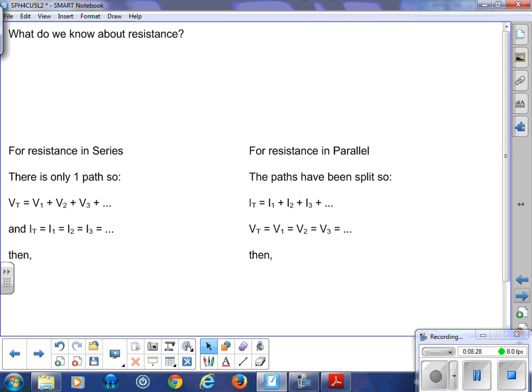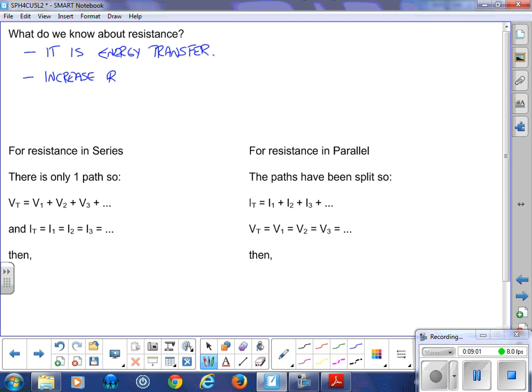What do we know about resistance? From the analogy we know that it's an energy transfer. We are having some resistance in the form of, for example, light bulbs. The electrons are slowed down, generate that heat, that glow, and create light. Also, if we increase our resistance, we can slow down the current, and vice versa. If we decrease resistance, we can speed the current up.